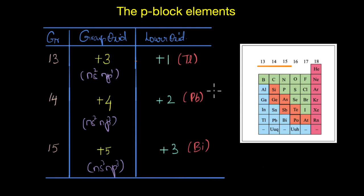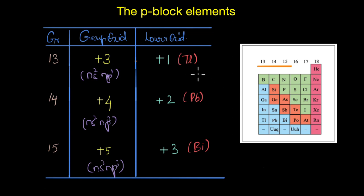In this video we are going to talk about the inert pair effect. We know that in certain groups like groups 13, 14, and 15, the heavier members of the groups exhibit a different oxidation state — that is, a lower oxidation state compared to the group oxidation state.